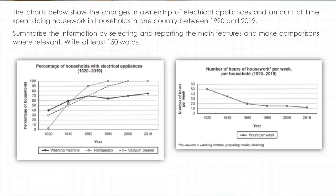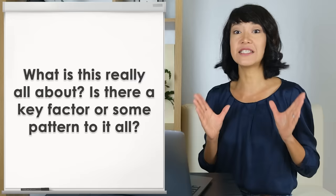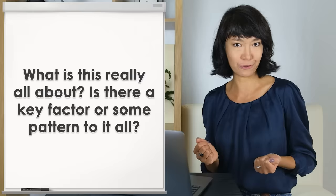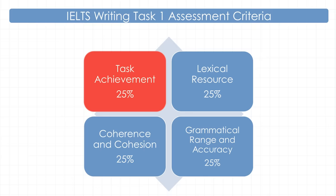Task 1 assesses our ability to write a report summarizing data presented in a number of possible ways. The question never varies. The idea is for you to find the key elements in the information. Above all, ask yourself: what is this really all about? Is there a key factor or some pattern to it all? Your answer to this question is absolutely essential if you want to get a high score in task achievement — the first of the four criteria examiners assess.